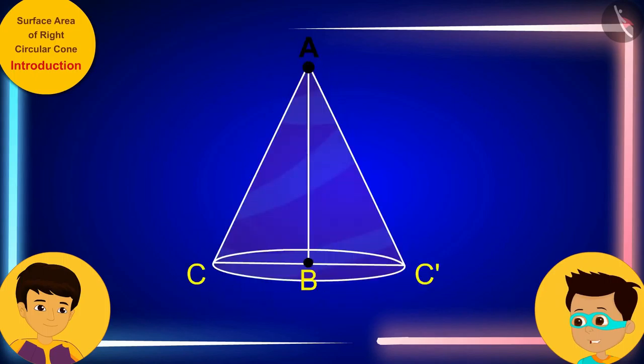Here, point A is called the vertex of this right circular cone. AB, its height. And BC is the radius of its base. And do you know something new? AC is called slant height of this cone.